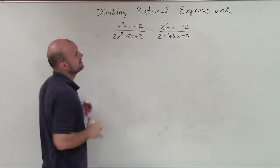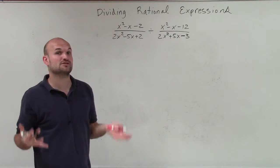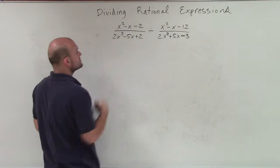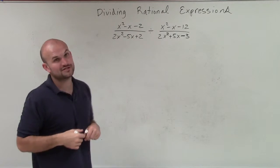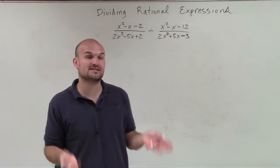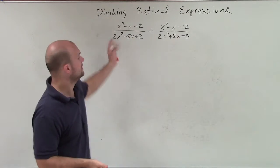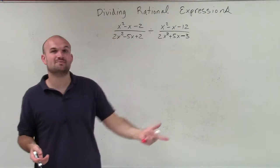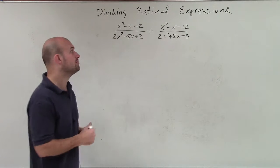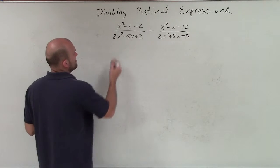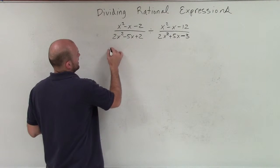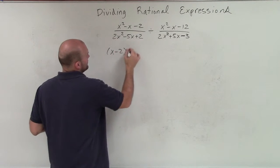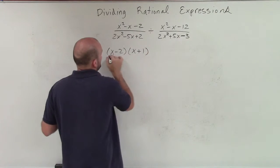So let's simplify this, because these are trinomials and we know we're going to have to factor. So I have x squared minus x minus 2. And since my a is 1, I need to determine what two values multiply to give me negative 2, but then add to give me negative 1. I can factor that to x minus 2 times x plus 1.